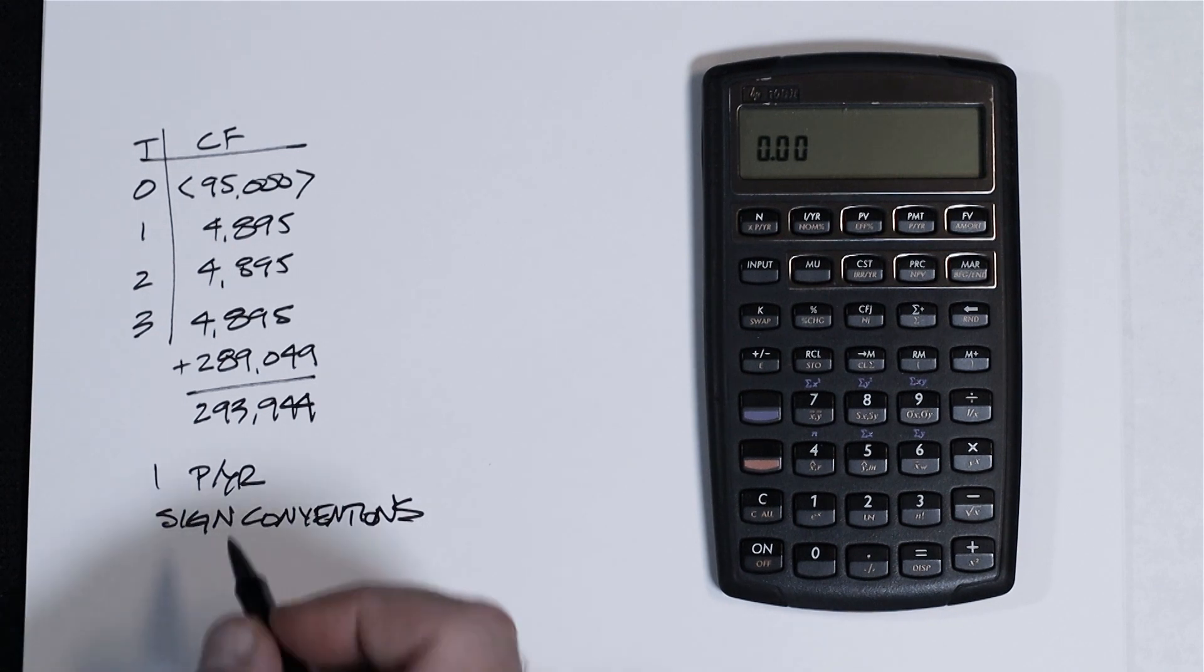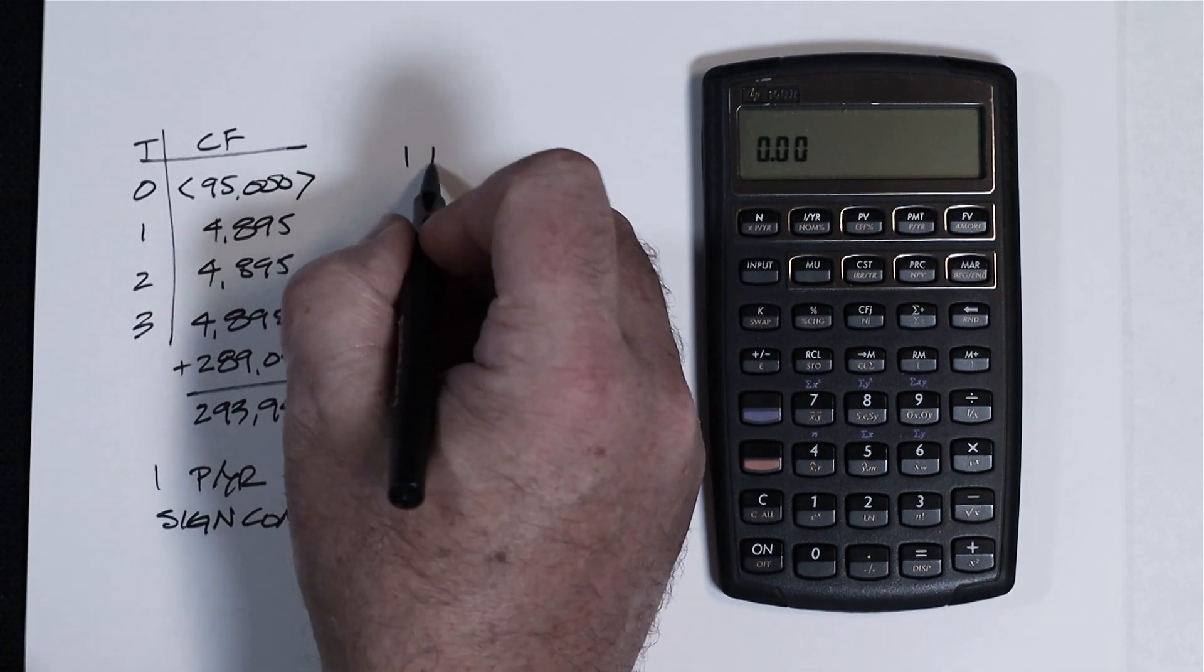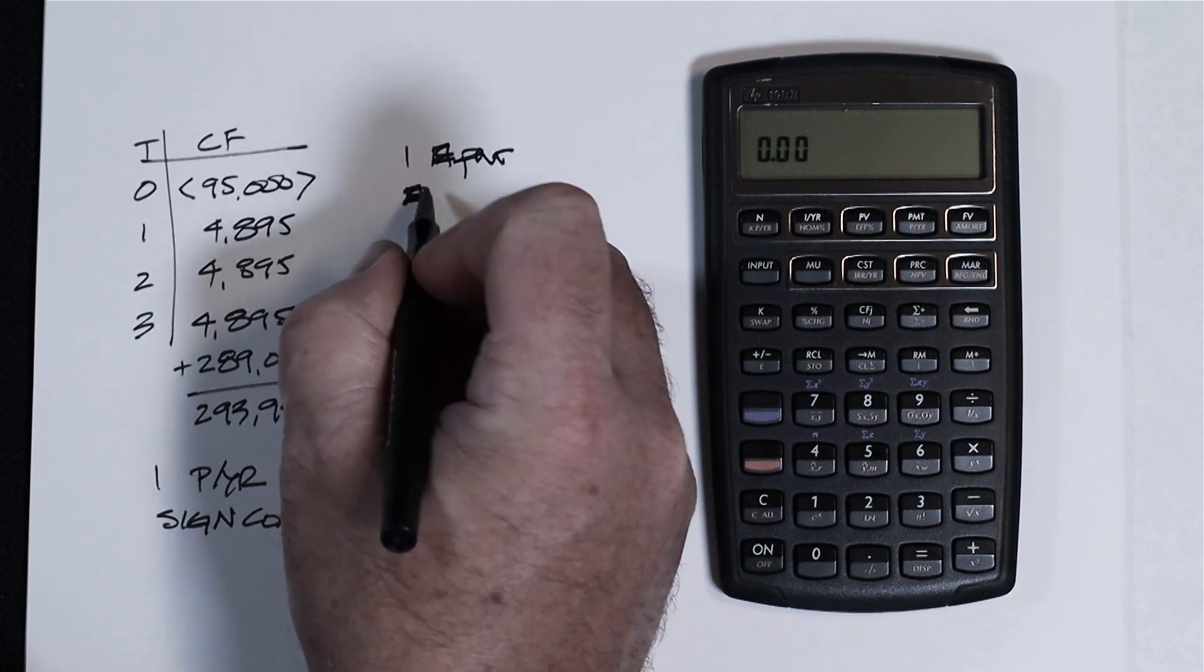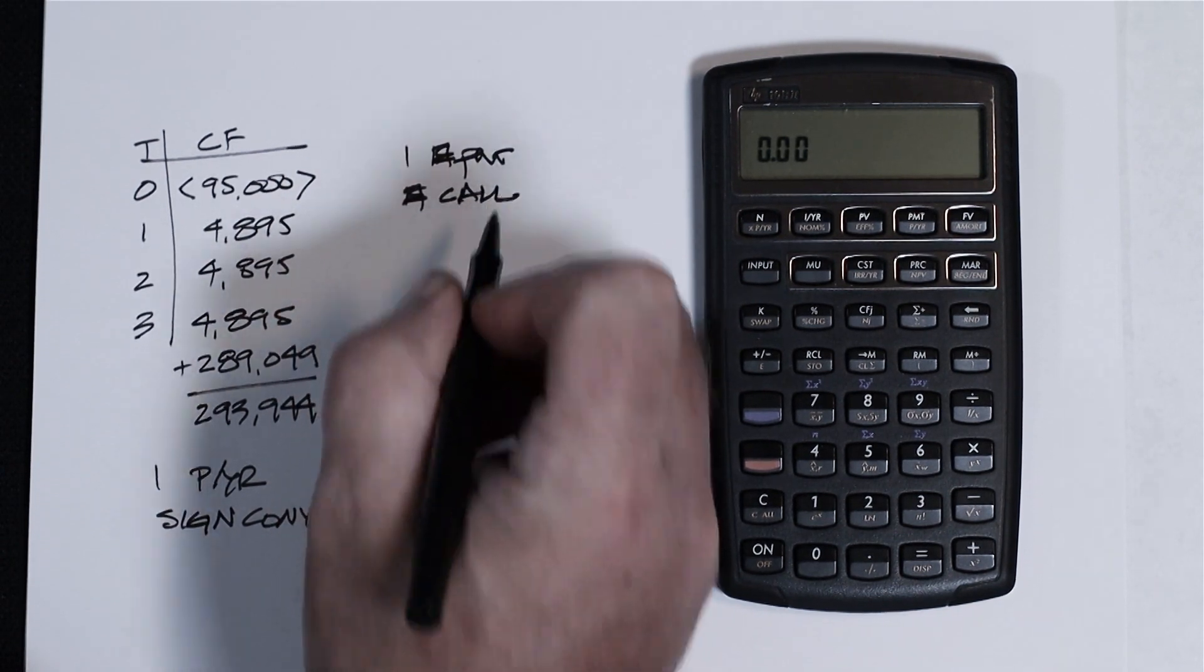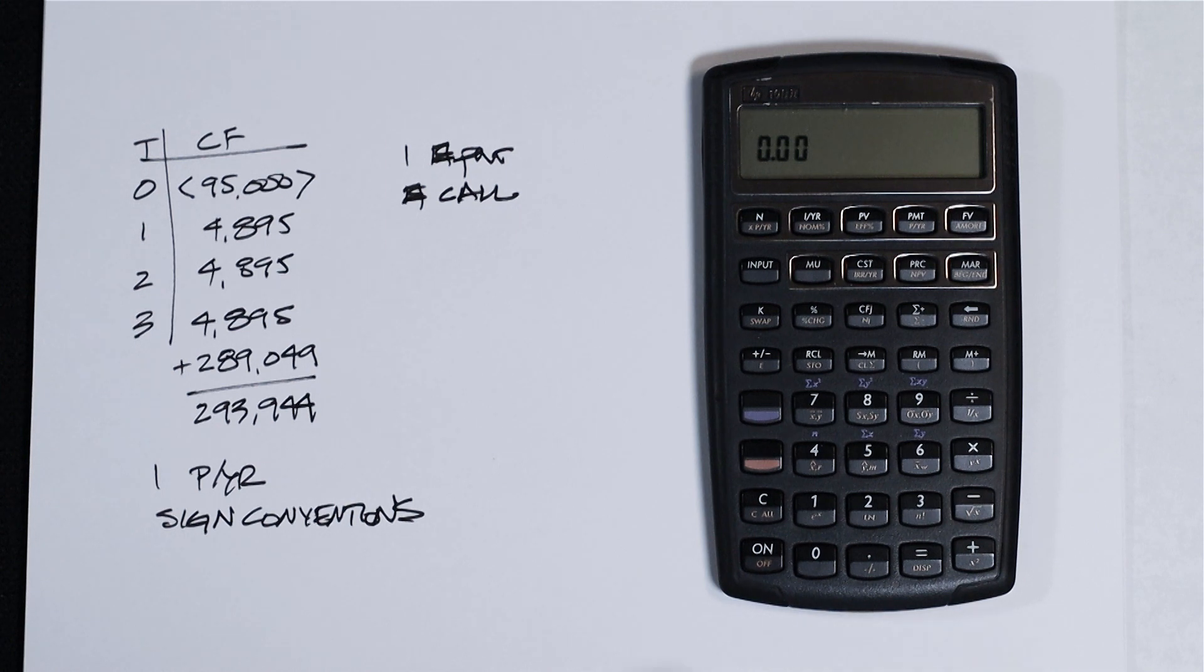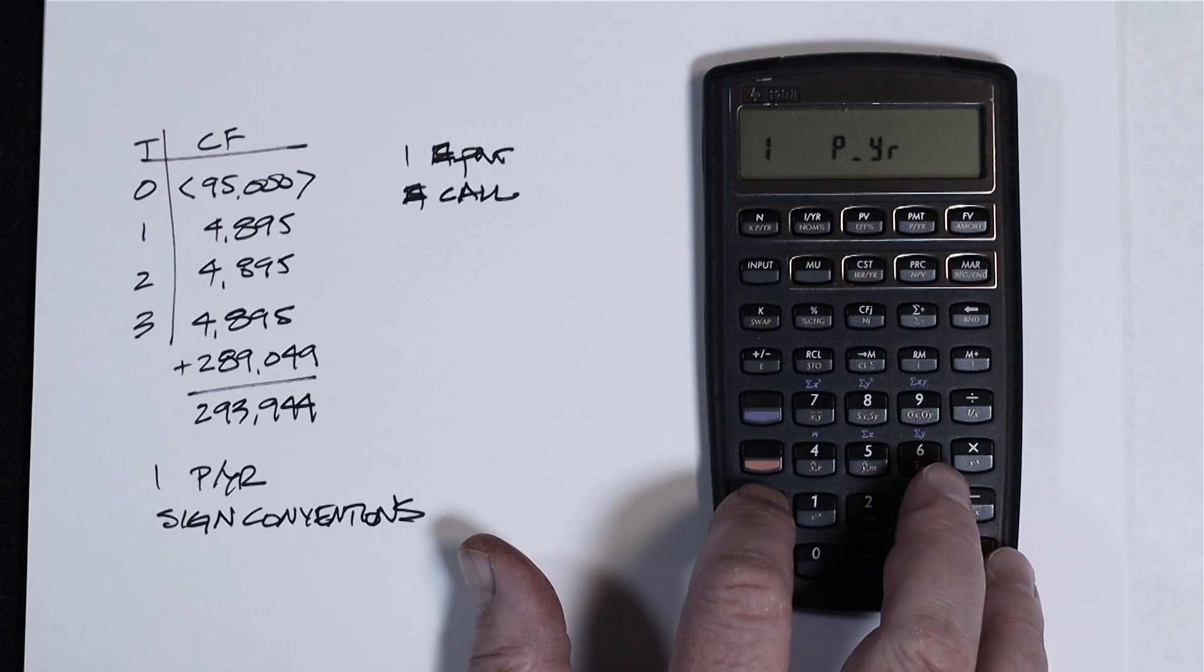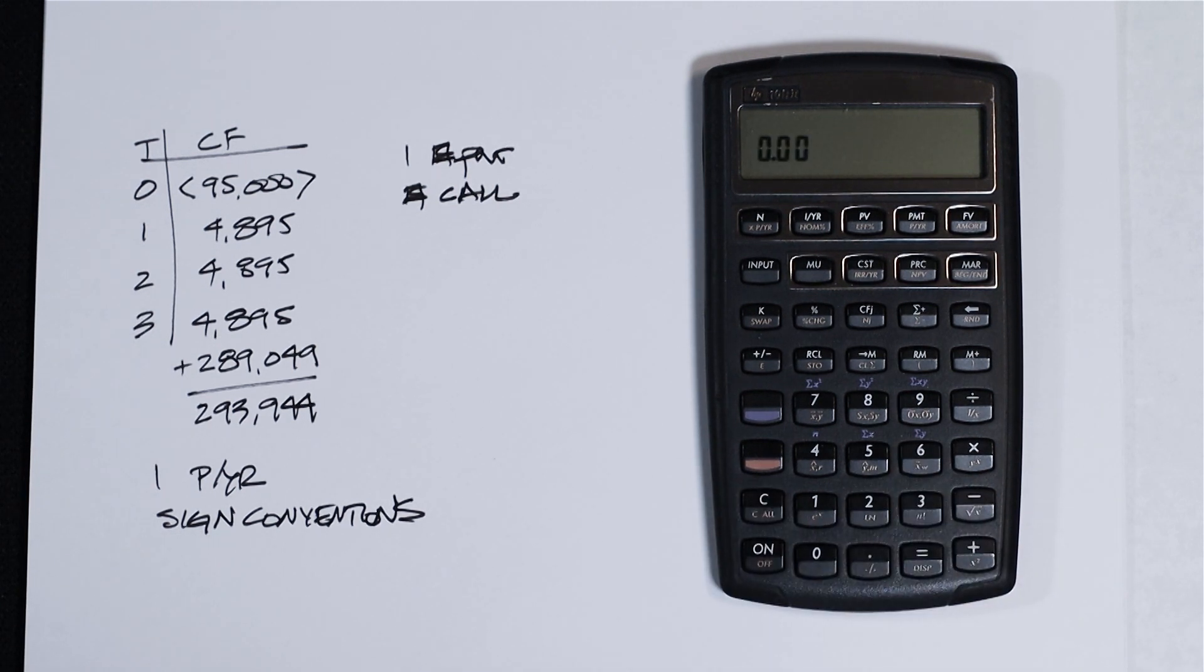So let's do this. And we'll start with one gold key payment, gold key, clear all. One gold key payment, gold key, and I'm going to hold down the clear all key just to make sure I'm in one payment per year. When we're entering cash flows, we're always in one payment per year.